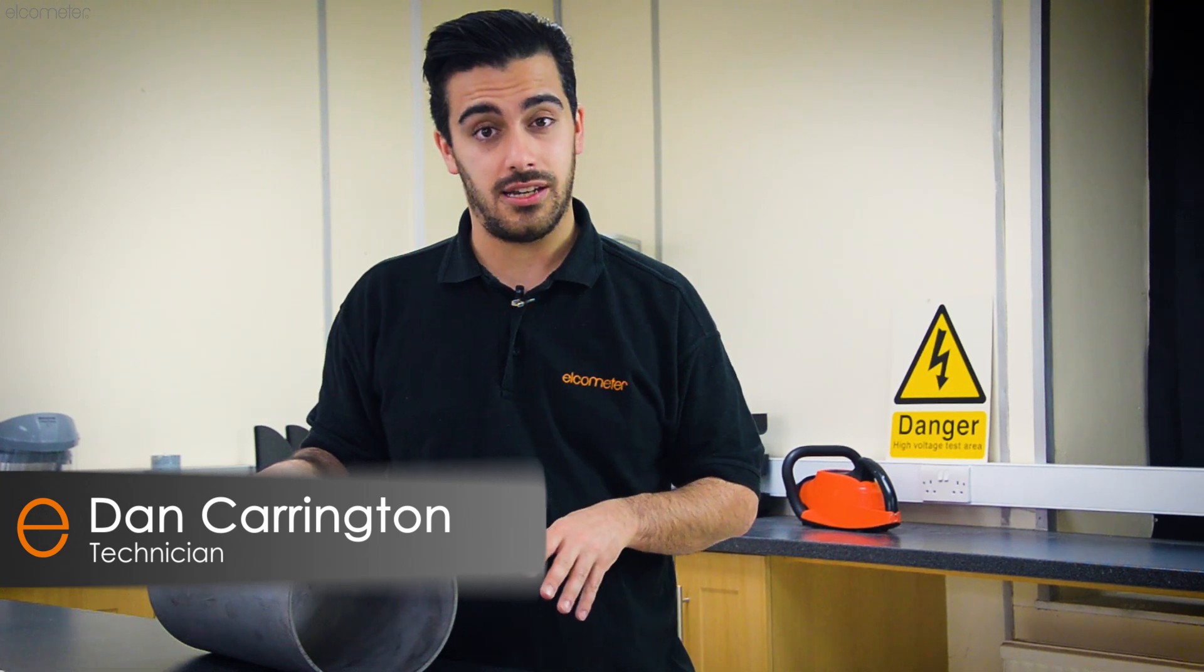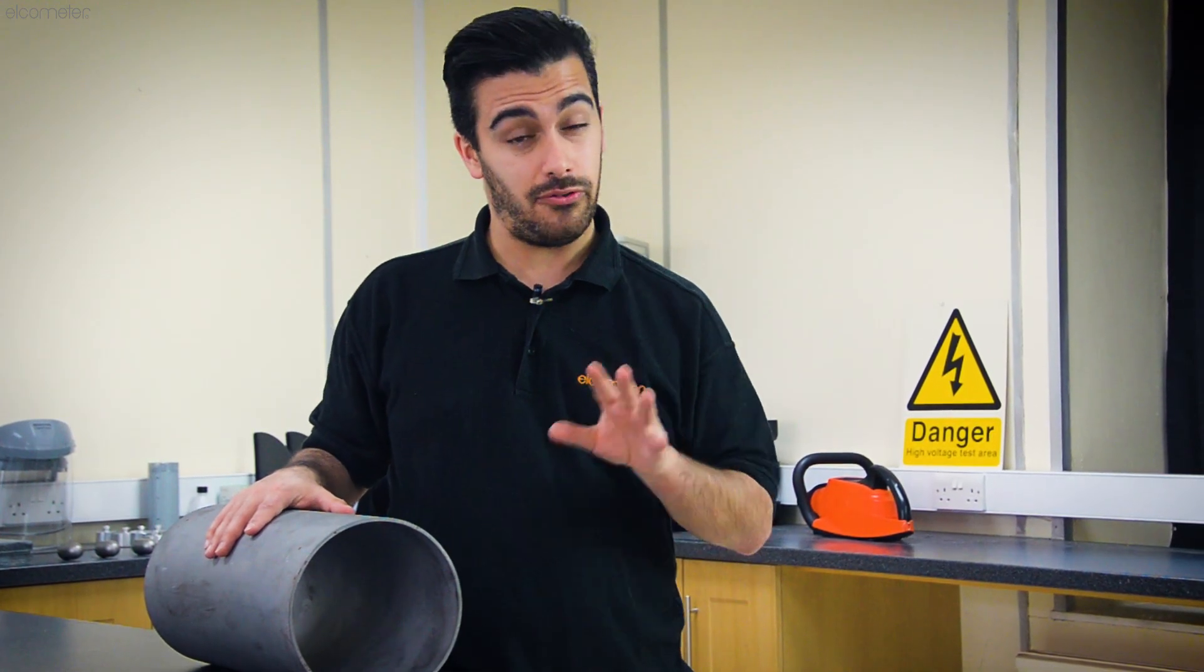The Elcometer MTG2 ultrasonic material thickness gauge has been designed to provide fast, accurate material thickness measurements of uncoated steel substrates, ideal for monitoring corrosion and erosion before painting.